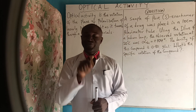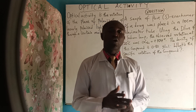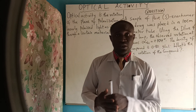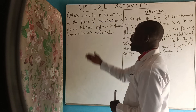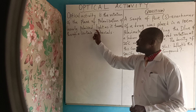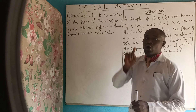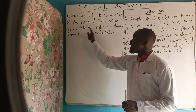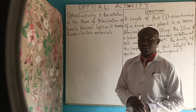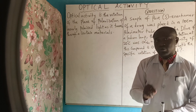Welcome to today's class. We want to discuss an important topic called optical activity. Optical activity is the rotation of the plane of polarization of linearly polarized light as it travels through certain materials. This term optical activity can also be called optical rotation or rotary polarization.